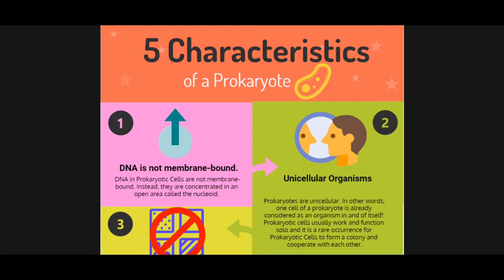So let's now refer to the diagram. First is the prokaryotic type of cells. As you can see, prokaryotic types of cells are very different from eukaryotic types of cells. So why?